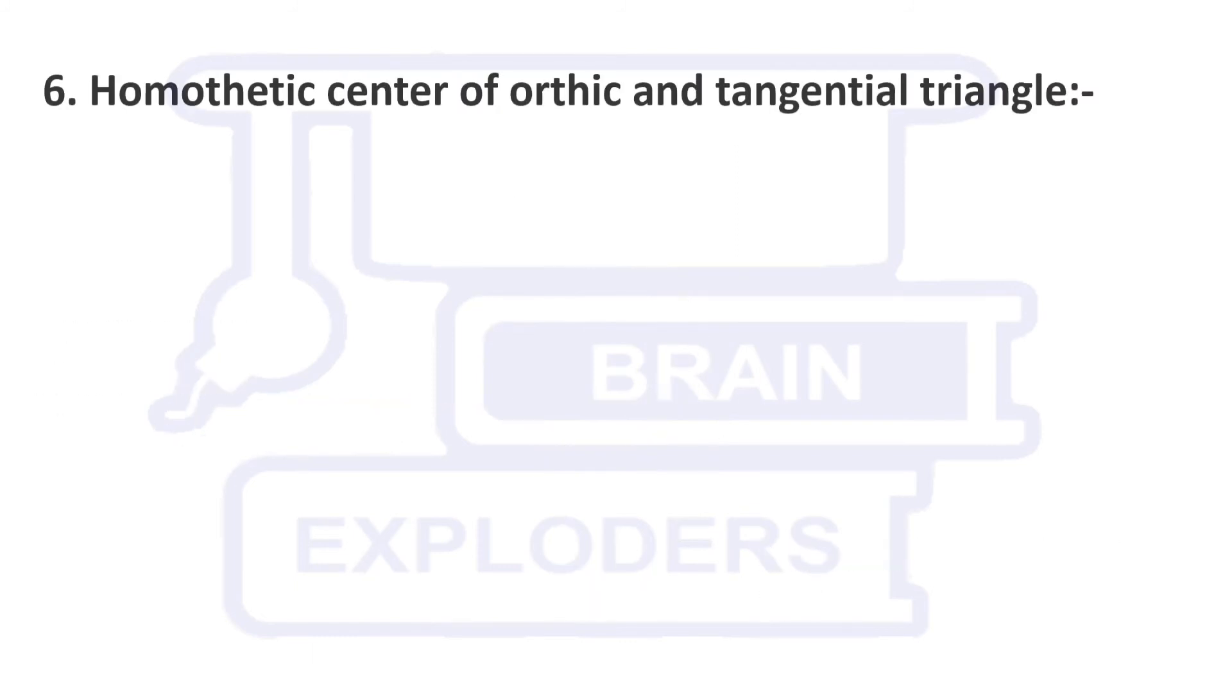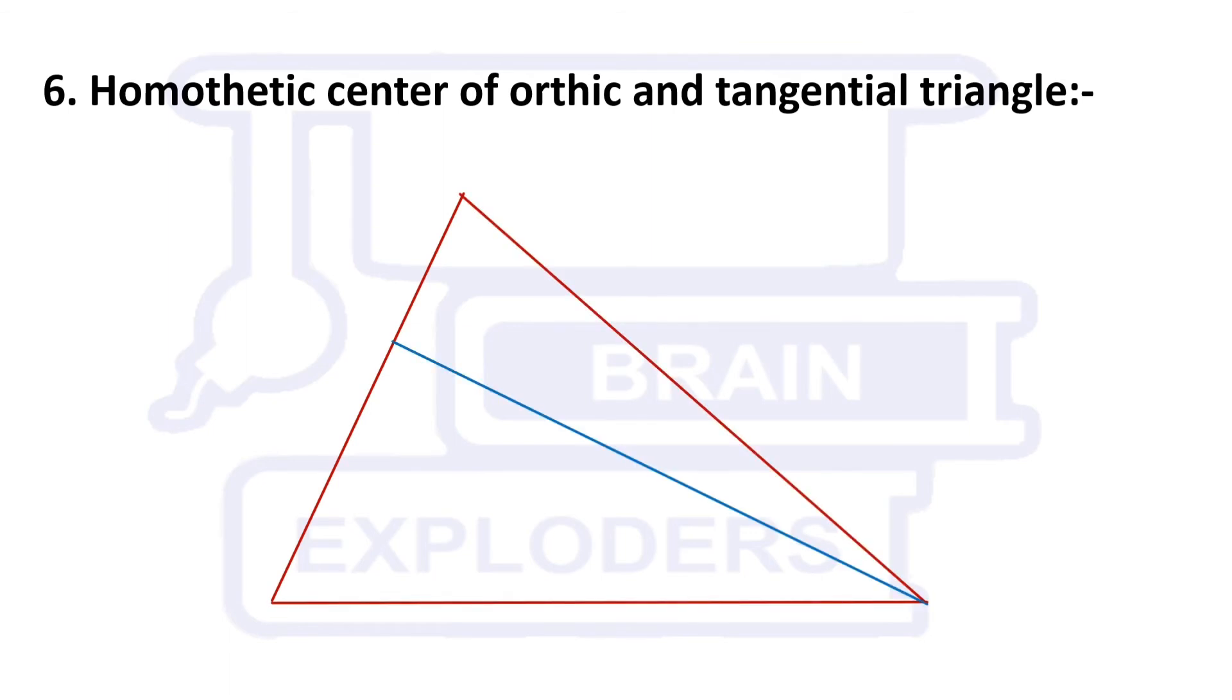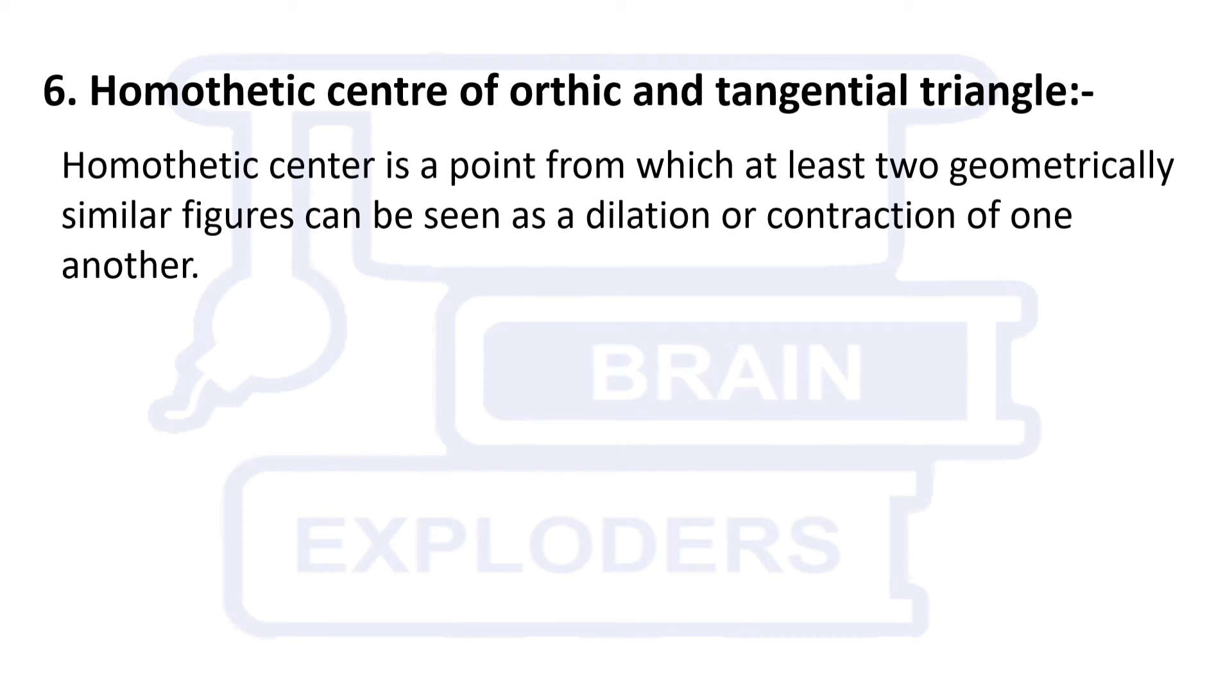Homothetic Centre of Orthic and Tangential Triangle. Orthic Triangle is a triangle formed by the feet of altitudes. Homothetic Centre is a point from which at least two geometrically similar figures can be seen as dilation or contraction of one another.